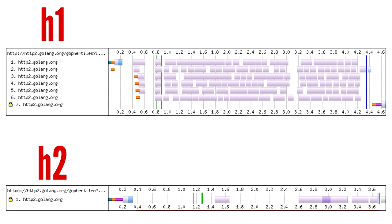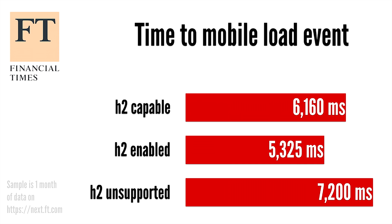To visualize this more, the waterfall graphs show H2 is much steeper because on the left side you have the limit of six connections, while on the right side you don't. Financial Times did a real-world test where they moved their static assets to an H2-enabled Akamai CDN. They segmented clients into three groups: those that didn't support H2, those that did but didn't use it, and those that did use it — and saw a great impact on mobile load time.